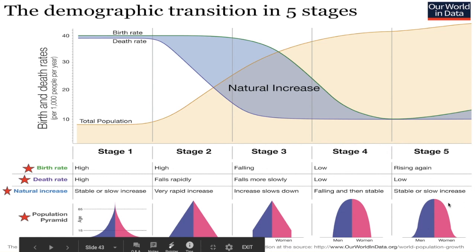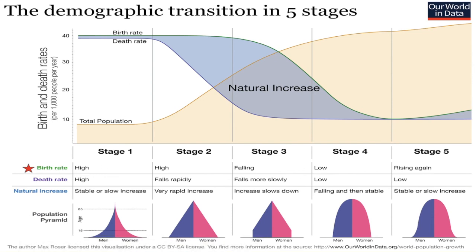Finally, when we get to stage five, you could actually start to see this fertility rate decrease and an inverted pyramid where it starts to move toward the middle, like we see in Japan, for example. But you could also start to see that birth rate kind of tick back up again. Stage five is a little tricky. One through five, it's all about these three things — birth rate, death rate, and the natural increase.